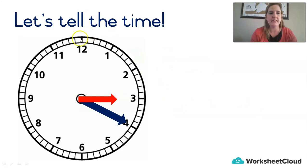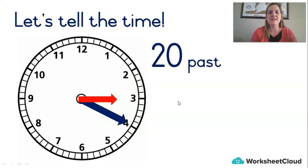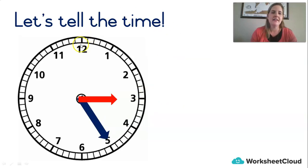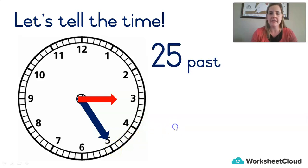Next one — let's count: 5, 10, 15, 20. That's 20 past — in this case, 20 past 3. Next: 5, 10, 15, 20, 25 — 25 minutes past. In this case, 25 past 3. You're getting good at these.